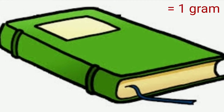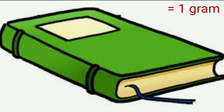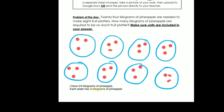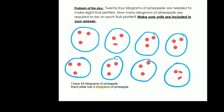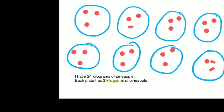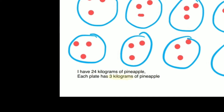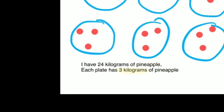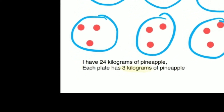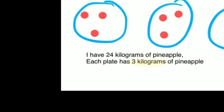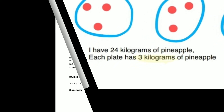Let's see what some of our friends decided to do on this problem. We have Melanie Rivera. She drew 8 circles and drew 3 dots in each circle to represent the total number. And she has a sentence that says, I have 24 kilograms of pineapple. Each plate has 3 kilograms of pineapple. Way to go, Melanie.